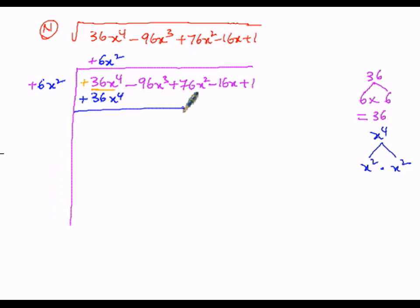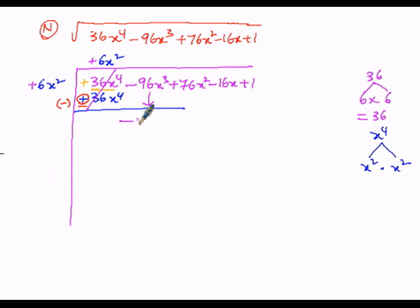Since this is a division method, we follow the ordinary division process — the next step is subtracting. Here plus becomes minus and minus becomes plus. So plus 36x to the power of 4 and minus 36x to the power of 4 get cancelled. Then we copy down the next two terms: minus 96x cubed and plus 76x squared.